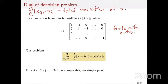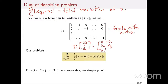Essentially, D times (x1,...,xn) returns x2-x1, x3-x2, and so on until x_{n-1}-x_n. The total variation is equal to the L1 norm of this vector of finite differences. So the problem I want to solve is: minimize one-half the L2 norm of (x - b) squared plus lambda times the L1 norm of Dx.